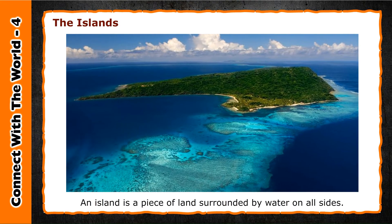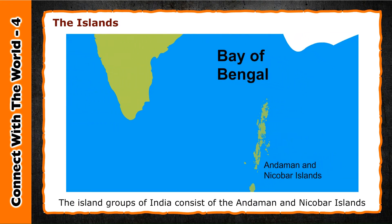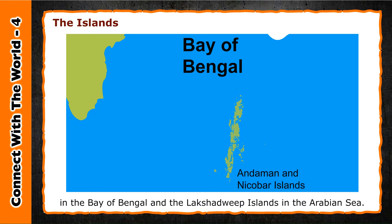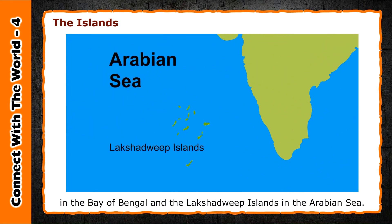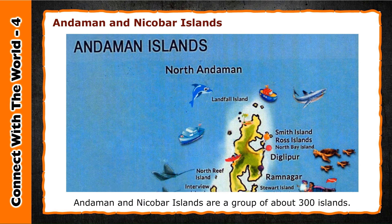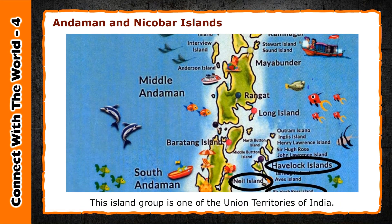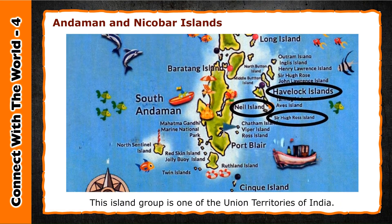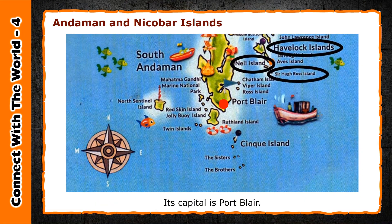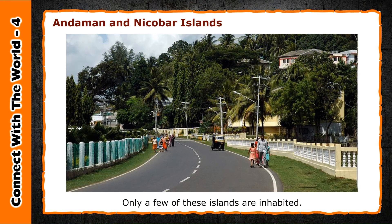An island is a piece of land surrounded by water on all sides. The island groups of India consist of the Andaman and Nicobar Islands in the Bay of Bengal and the Lakshadweep Islands in the Arabian Sea. The Andaman and Nicobar Islands are a group of about 300 islands. This island group is one of the Union Territories of India. Its capital is Port Blair. The islands are covered with dense forests and only a few of these islands are inhabited.